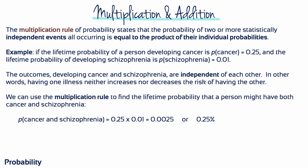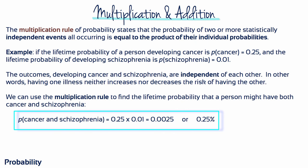The multiplication rule of probability states that the probability of two or more statistically independent events all occurring is equal to the product of their individual probabilities. For example, the lifetime probability of developing cancer is P equals 0.25, and the lifetime probability of developing schizophrenia is P equals 0.01. These outcomes are independent — having one illness neither increases nor decreases the risk of the other. Using the multiplication rule, the lifetime probability of having both is 0.25 times 0.01, which equals 0.0025, or 0.25%.